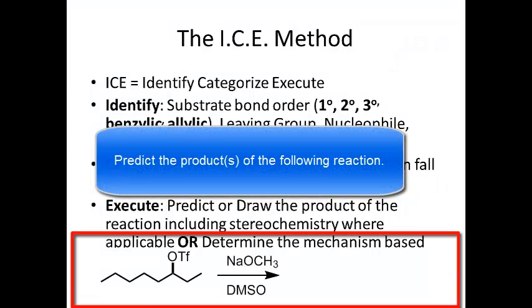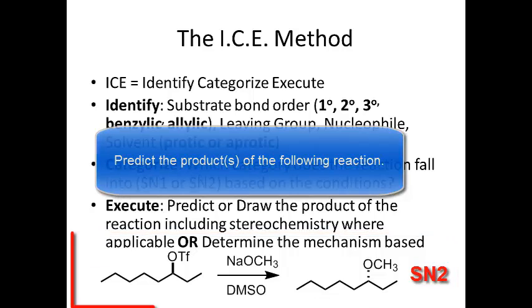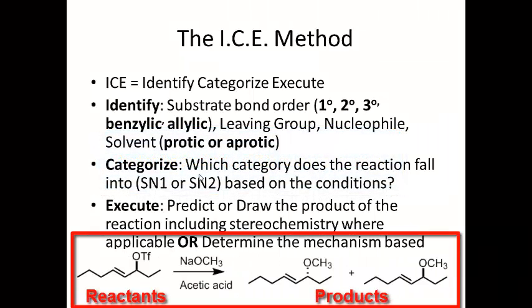On an exam, if it says predict the products: if you know it's SN1, you know you're going to get a racemic mixture and you draw two products with opposite stereochemistry. If it's SN2, you draw the product with inversion of stereochemistry. Or, if you're given both the reactant and the product, you can determine the mechanism based on the product.